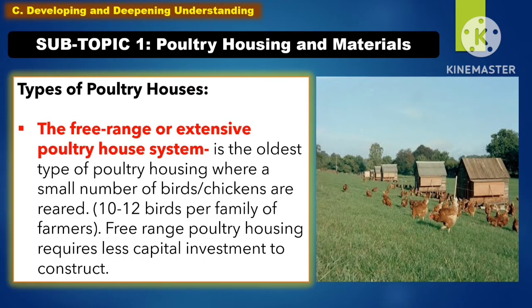The following are the types of poultry houses. The first one is the free-range or extensive poultry system. It is the oldest type of poultry housing where a small number of birds — chicken — are reared, so 10 to 12 birds per family of farmers. Free-range poultry housing requires less capital investment to construct.